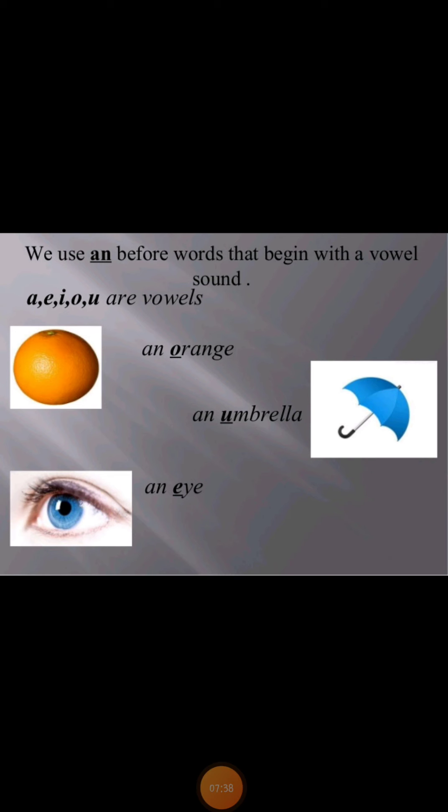We use an before words that begin with a vowel sound. Vowels are a, e, i, o, u. Examples: an orange, an umbrella, an eye. These are vowel letters and vowel sounds.